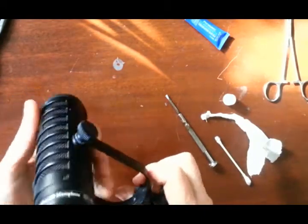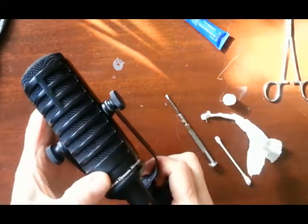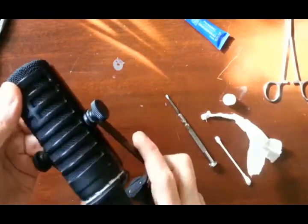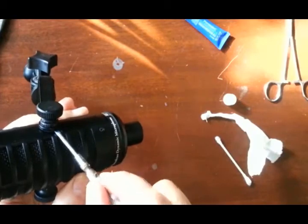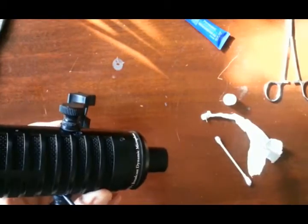The little round nut, tightening that down is what compresses the rubber bushing and gives you the friction. So now the body has some friction and it'll stay where you put it.